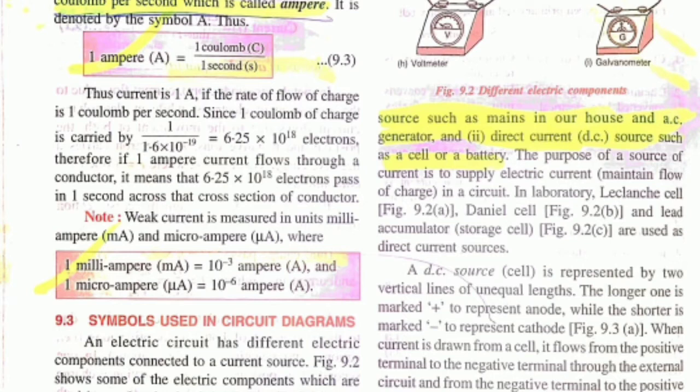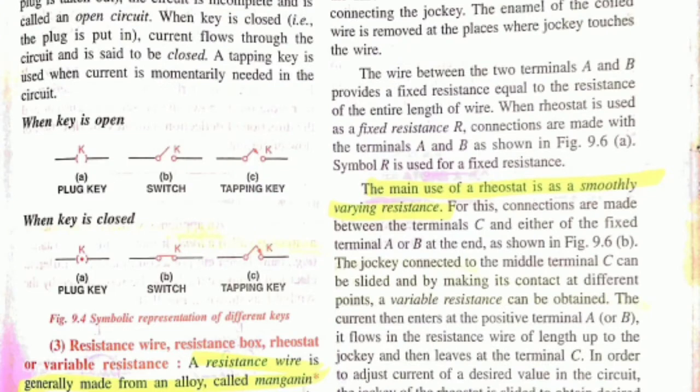Differentiate between alternating current and direct current. Key is used to put current on and off in a circuit. Again, remember the symbols, the diagram.